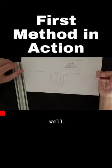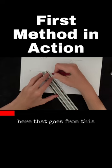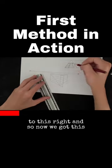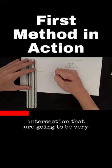We're just going to draw a diagonal here that goes from this to this. Now we've got these intersections that are going to be very important.